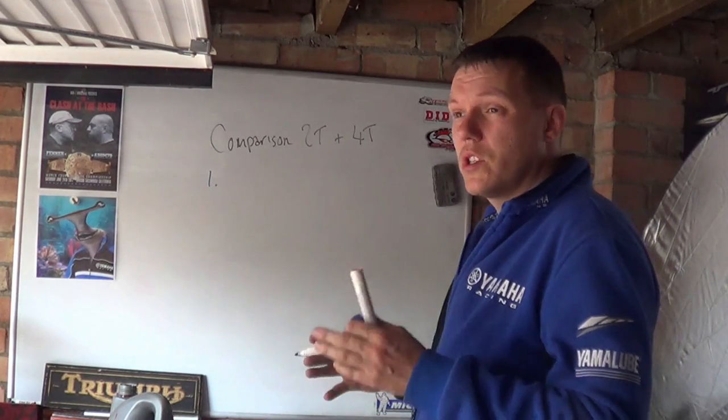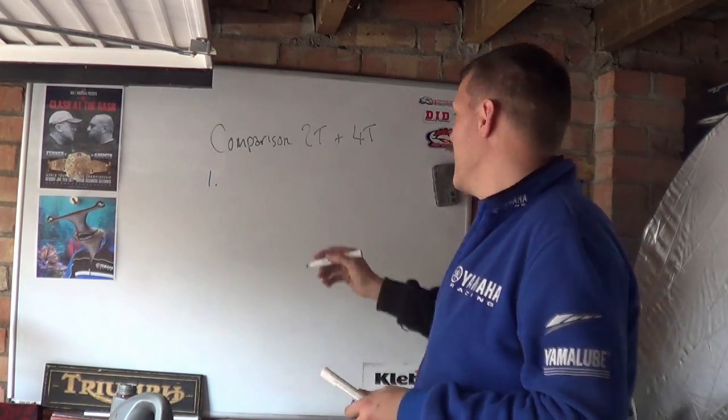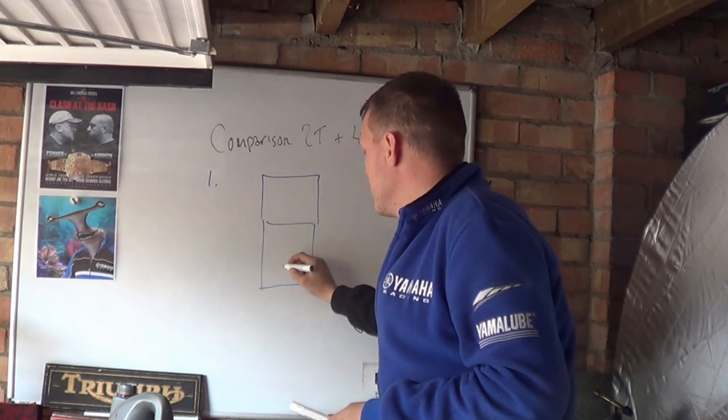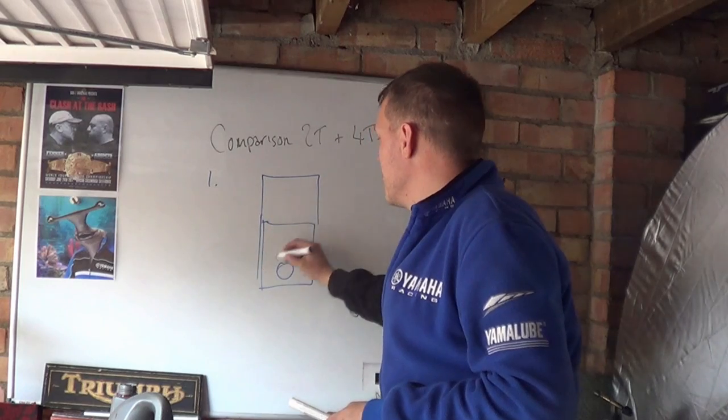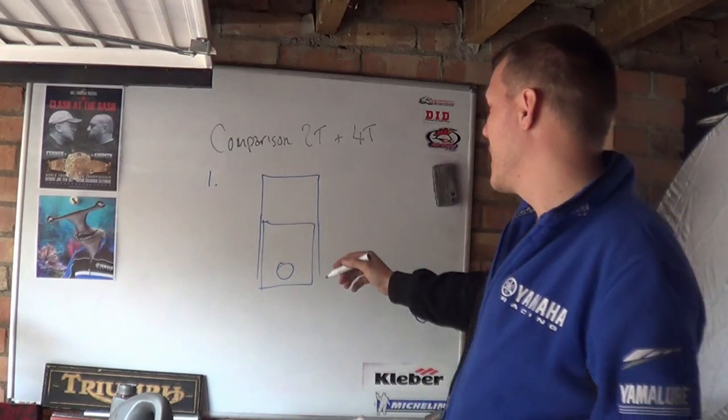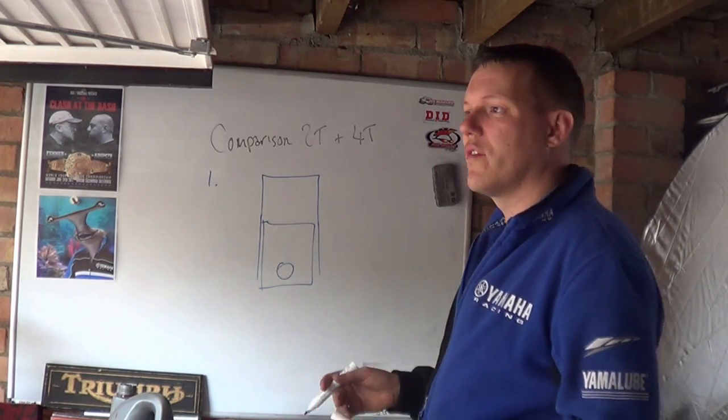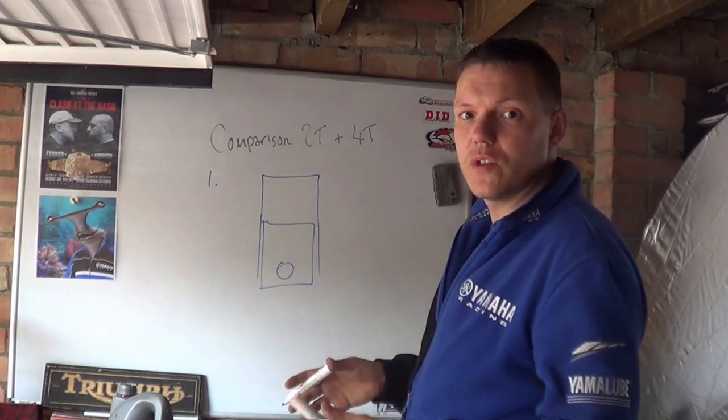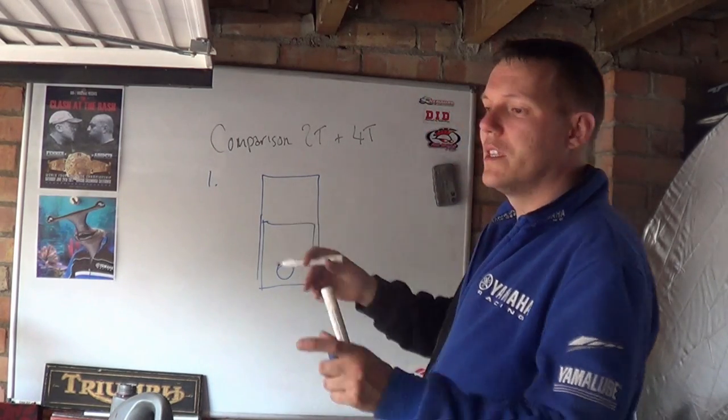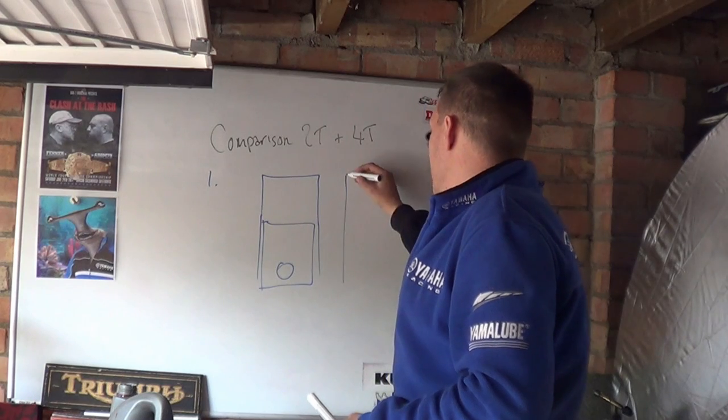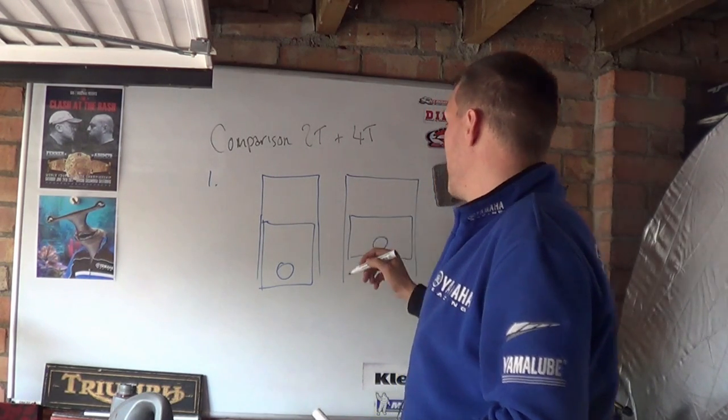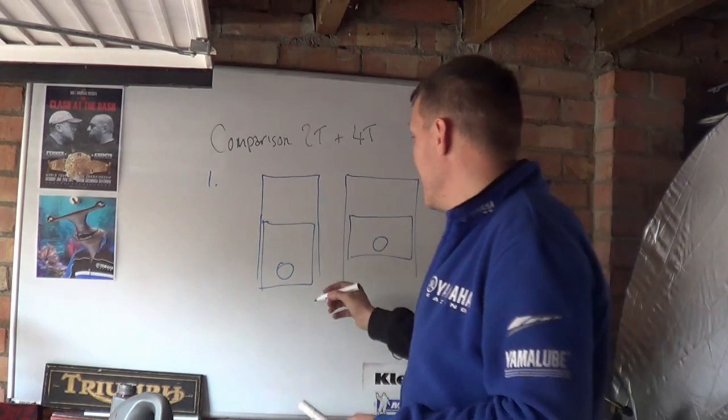Reason number one is all to do with piston surface area. In your combustion chamber, you have your piston in a two-stroke which is quite a long piston—a long but smaller diameter piston—generally because the piston has to have side skirts to close off the ports, your transfer port and your exhaust port. Your piston diameter is usually quite small.